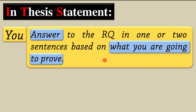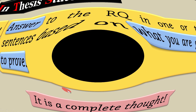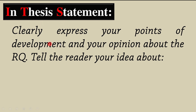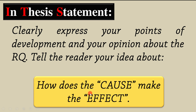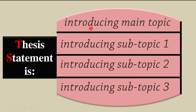In the thesis statement you answer the research question in one or two sentences — not two lines — based on what you are going to prove. Do not make it extended; it must be short but complete. Generally it is a complete thought. In the thesis statement, clearly express your points of development and your opinion about the research question. Tell the reader your idea about how the cause makes the effect, not in the form of a question but in the form of a statement.